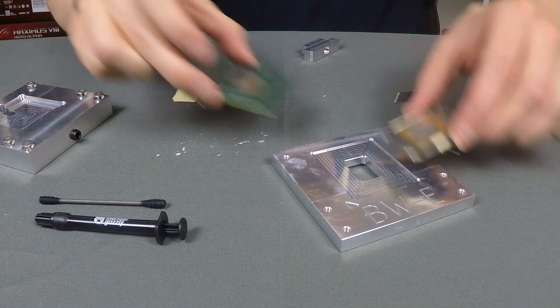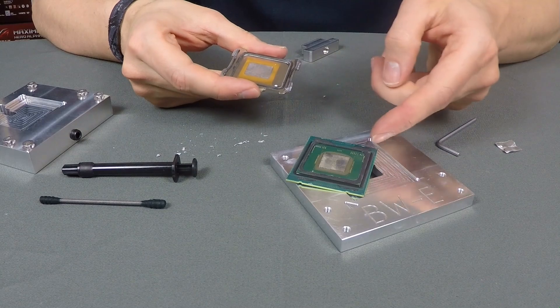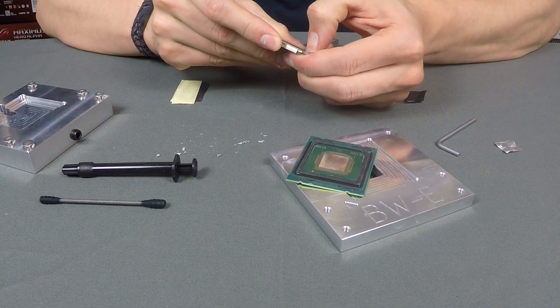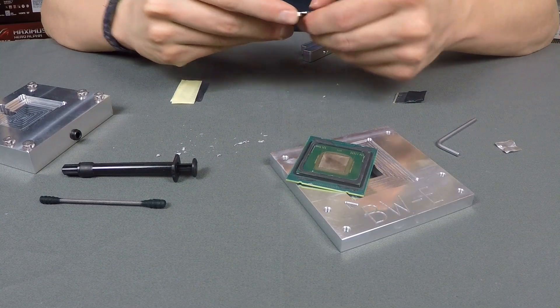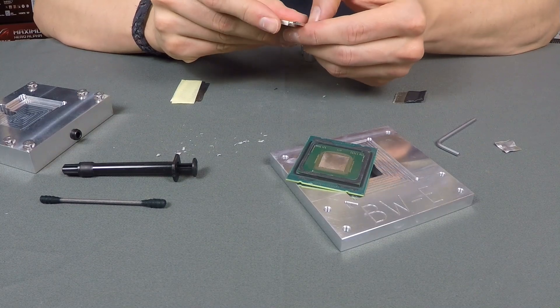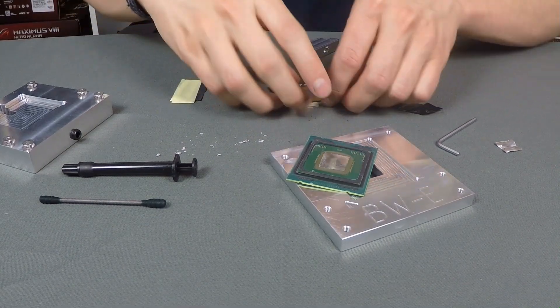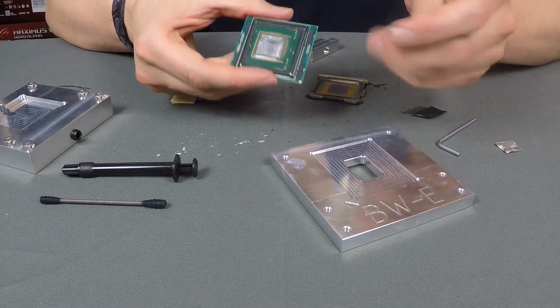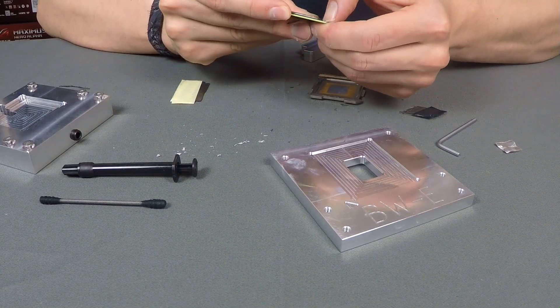Now we have to remove the glue, because otherwise the glue would prevent the IHS from having very good contact with the CPU. The solder preform is around one millimeter or half millimeter thick, so if you don't remove the glue, the IHS will not have a direct and good contact to the chip, and it will result in really bad temperatures. Take your time and make sure you completely remove everything of the glue. You can take your fingernail for this or a plastic card, but make sure you don't use anything sharp on the CPU. Otherwise you really risk cutting into the PCB and damaging the chip.